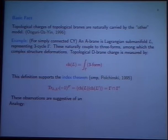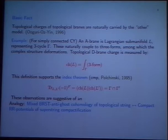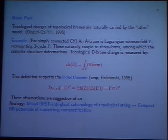The charge of the brane is given by integrating over the three-cycle the three-forms. You can also see this from the index theorem — this is the Polchinski way of computing D-brane charge: the Witten index in the open string sector between two Lagrangians is given by the intersection of the corresponding three-cycles. This observation gives an analogy: the mixed BRST anti-ghost cohomology is like the Ramond-Ramond potentials of a superstring compactification.